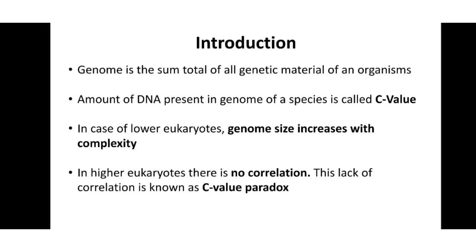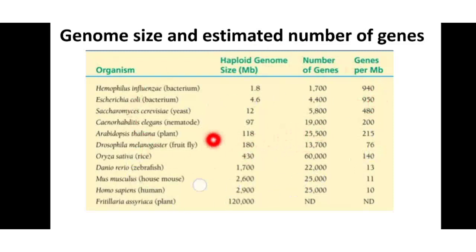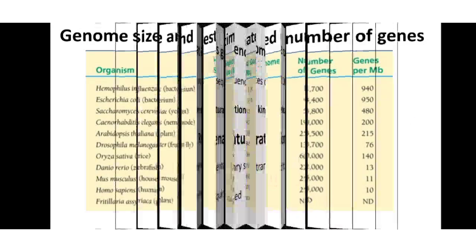Before discussing the measurement of genome complexity, let's look at some genome sizes and estimated numbers of genes. For example, Haemophilus influenzae has a haploid genome size of 1.8 megabases and approximately 1,700 genes. The slide also shows genome sizes and estimated gene numbers for E. coli, Saccharomyces cerevisiae, Drosophila melanogaster, Oryza sativa, Mus musculus (house mouse), and Homo sapiens — whose haploid genome is 2,900 megabases with approximately 25,000 genes.